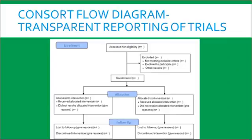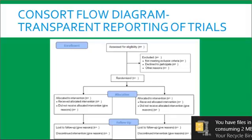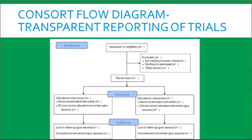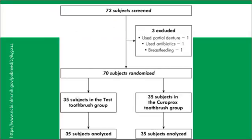Clinical trials have something unique, and that is the CONSORT flow diagram. The CONSORT flow diagram was developed by several journal editors about 20 years ago, who decided there needed to be consistency in reporting of clinical trials. They came up with this flow diagram so the reader knows how many people were assessed for eligibility, how many got excluded and based on what characteristics, how many were randomized into the different groups, and how many were analyzed. For example, in this study, 73 subjects were screened, 3 were excluded, 70 were randomized — 35 to each group — and all subjects were analyzed.